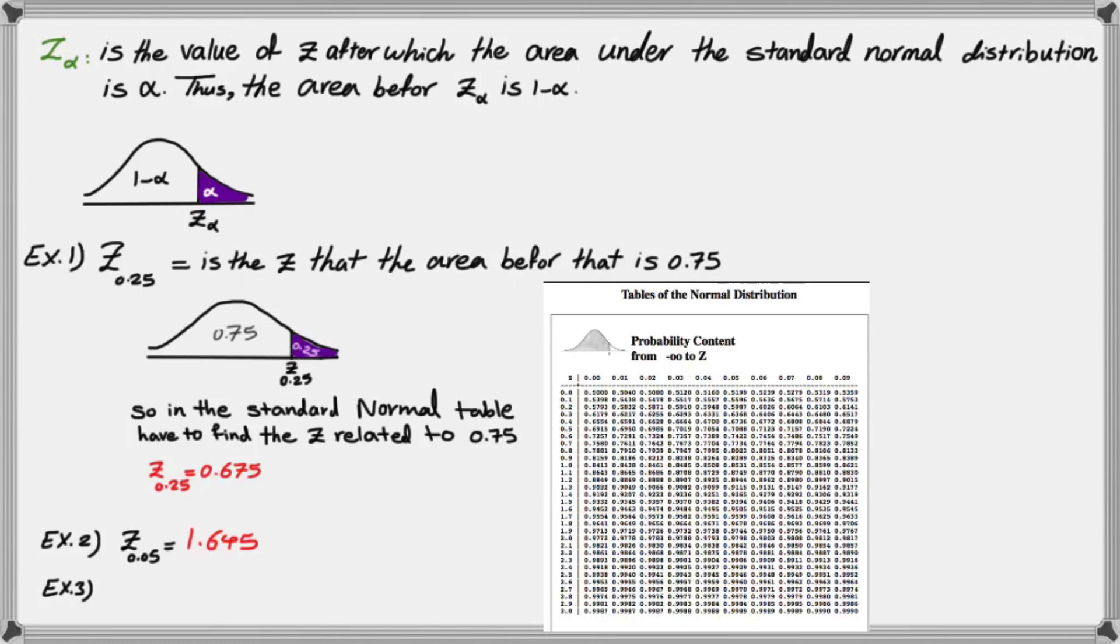The next example is Z of 0.025. And 0.025 complement is going to be 0.975. So inside the table, I have to look for 0.975. And that is exactly related to 1.96. So you don't need to interpolate or get the average of two numbers. In this case, you have the exact number, which is 1.96.